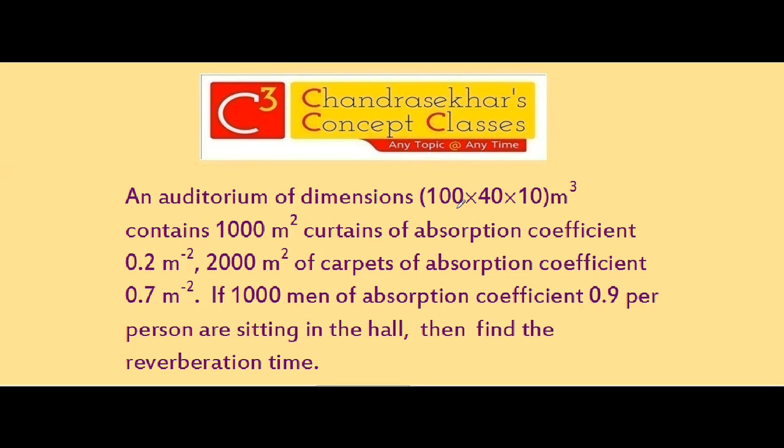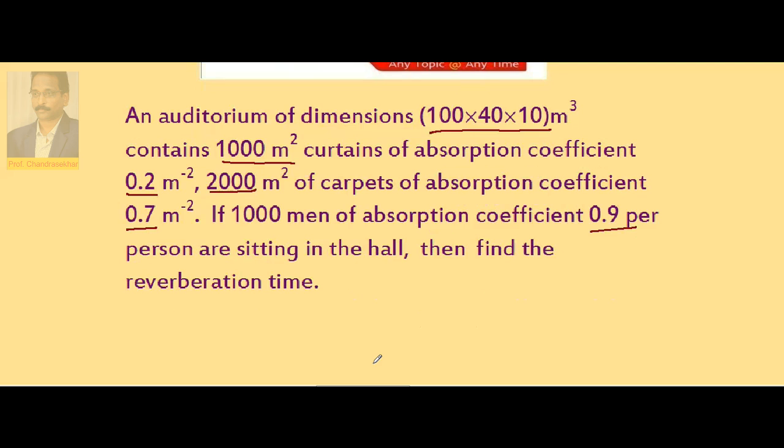An auditorium of dimensions 100 x 40 x 10 m³ contains 1000 m³ curtains of absorption coefficient 0.2, 2000 m² carpets of absorption coefficient 0.7, and 1000 men of absorption coefficient 0.9 per person sitting in the hall. Then find the reverberation time. We know that reverberation time t is given by 0.17 V divided by sigma a s.